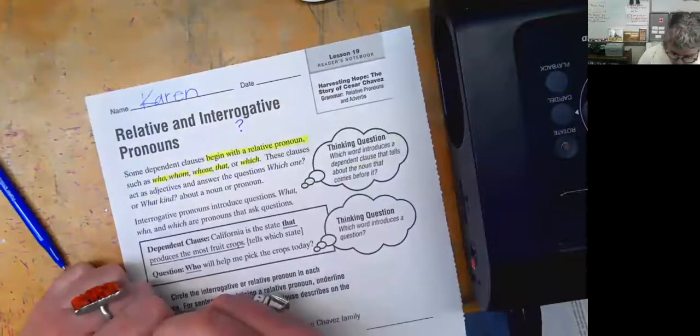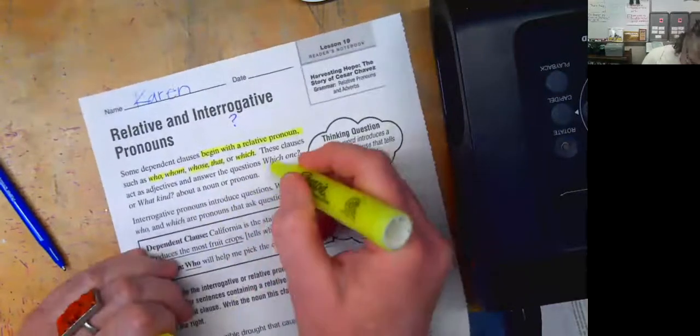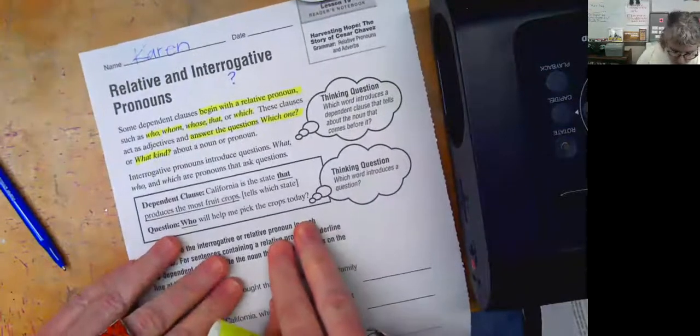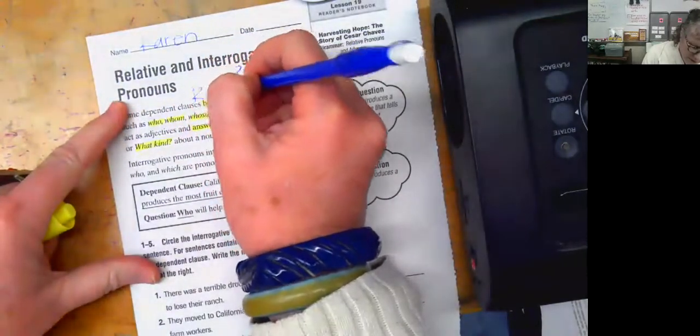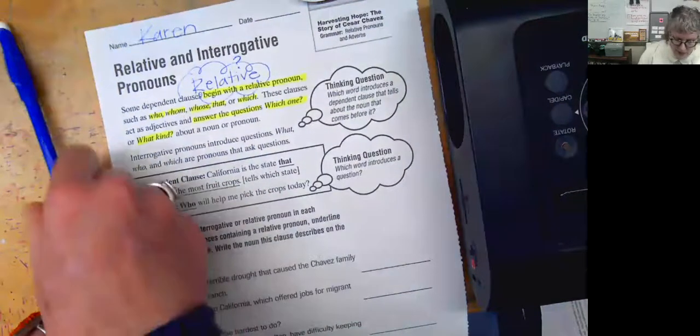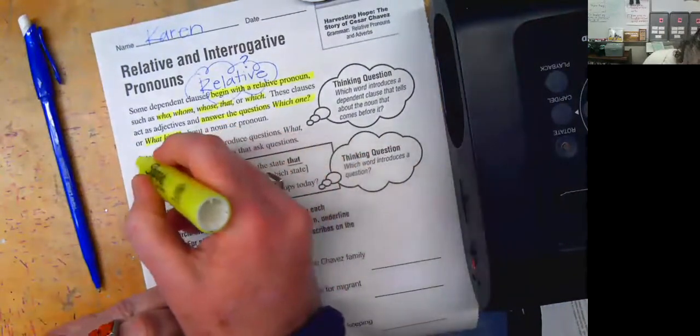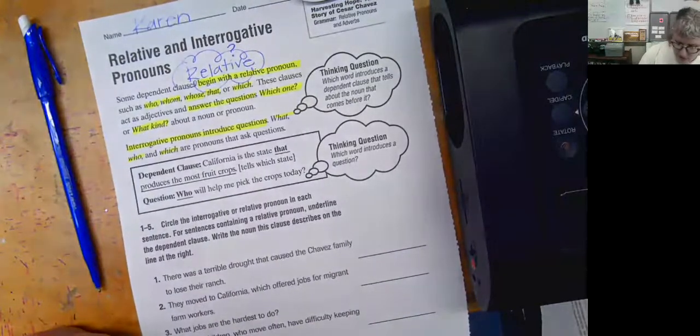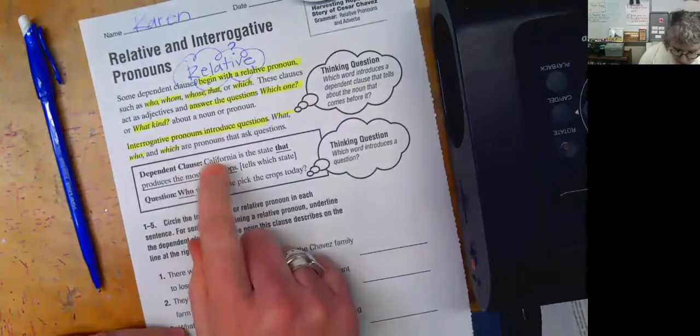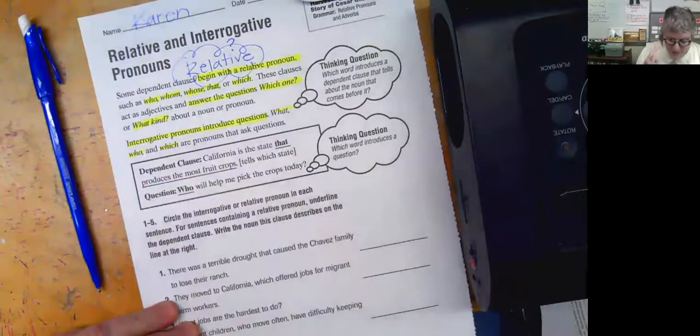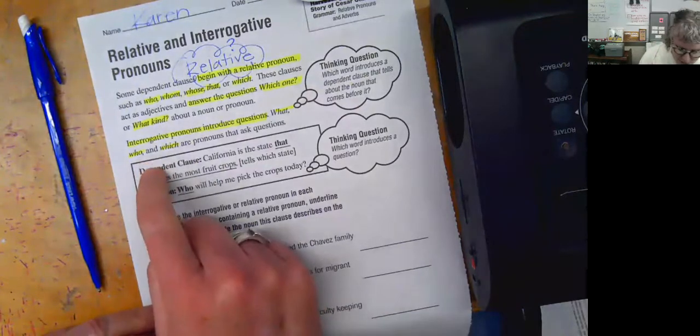These clauses act as adjectives and they answer the questions which one and what kind about a noun or a pronoun. Interrogative pronouns, so this is relative. So relative pronouns are going to answer the questions which one or what kind. Interrogative pronouns introduce questions. What, who, and which are pronouns that ask questions. Okay, so these are all dependent clauses, but there's just two kinds of dependent clauses. So one is relative, one's interrogative.